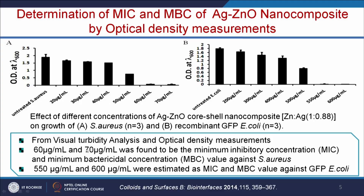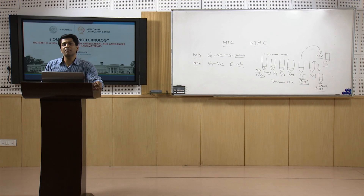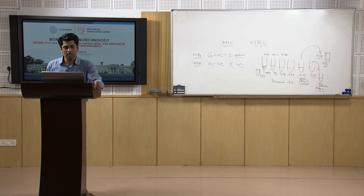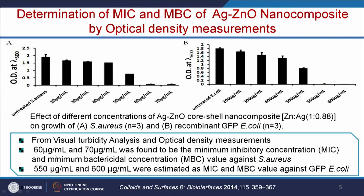Depending on whether bacteria is gram-positive or gram-negative, the antibacterial concentration will vary. It also depends on the bacterial strain. In this example, 60 micrograms is the MIC and 70 micrograms is the MBC for gram-positive bacteria. For E. coli, the MIC is 550 micrograms and MBC is 600 micrograms. N=3 means the experiment was repeated three times, and you plot the average with a standard deviation error bar.